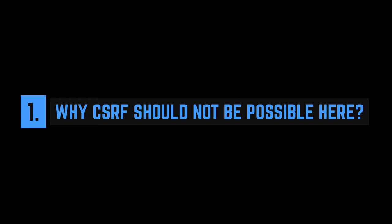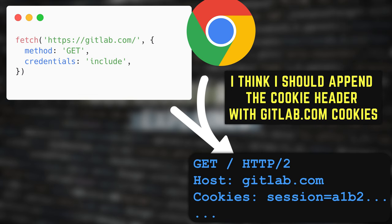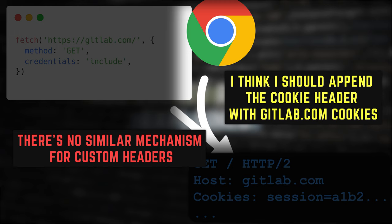CSRFs rely on the fact that browsers append cookies automatically to requests — and for the purpose of this video, let's leave same-site and other things aside. One of the ways to prevent CSRFs is to use a custom header like X-CSRF protection. It's robust because the browser has no mechanism to automatically append a custom header, so CSRF in this case is not possible.